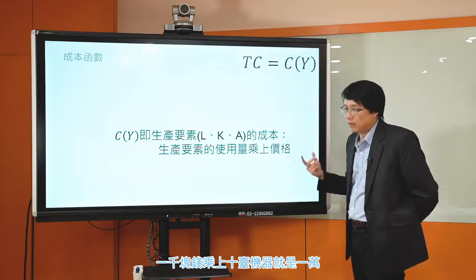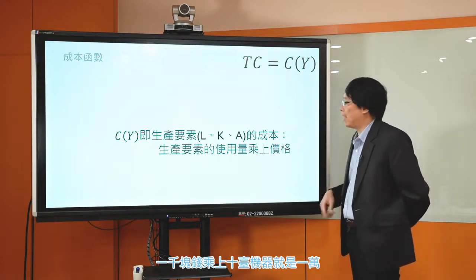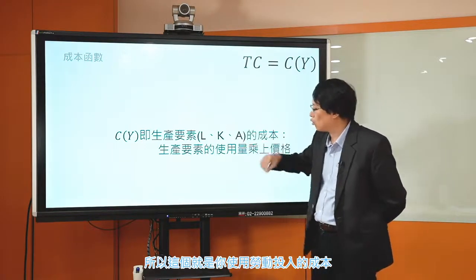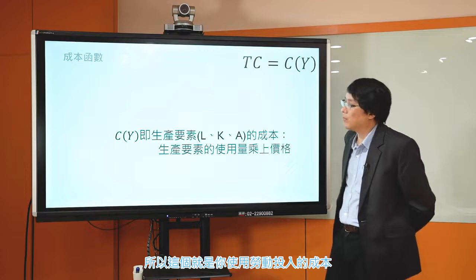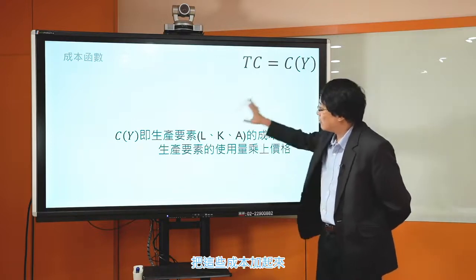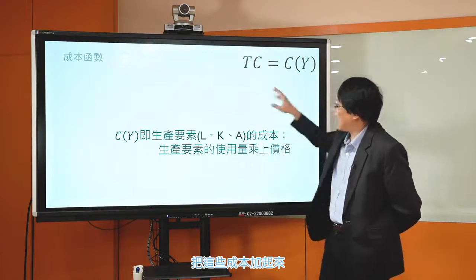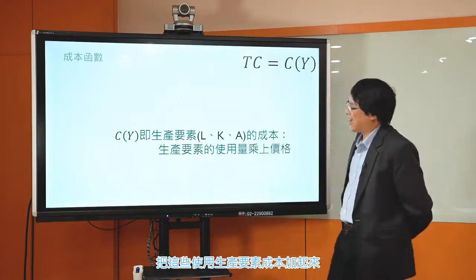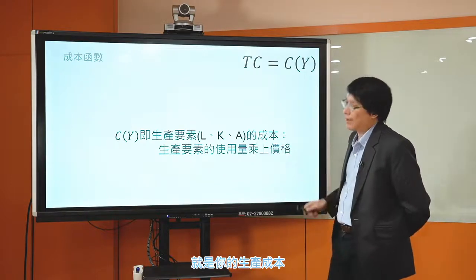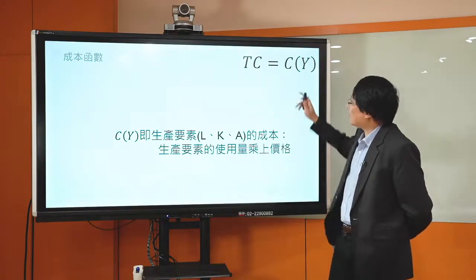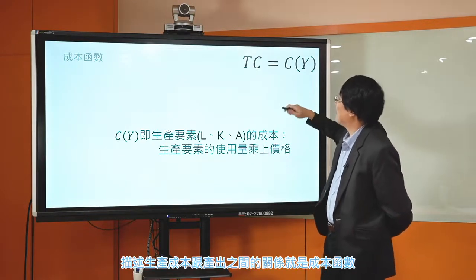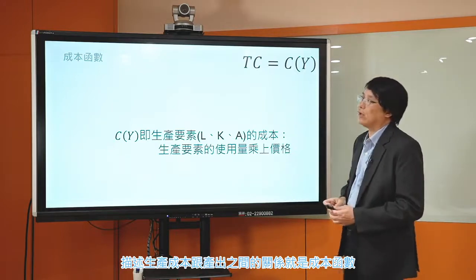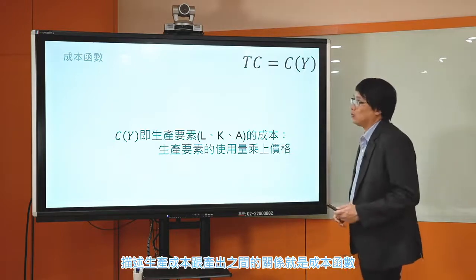就是400。你不会只使用劳动，你还要使用资本。使用资本的成本，比如你今天使用10台机器，你把机器租来，每台机器的租金是1000块钱，那你使用机器的成本就是1000块钱乘上10台机器，就是10000。把这些使用生产要素的成本加起来就是你的生产成本，描述生产成本跟产出之间的关系就是成本函数。